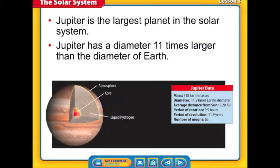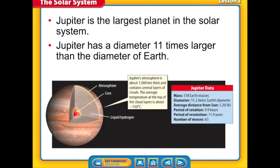Overall composition of Jupiter: Jupiter is 80% hydrogen and 20% helium, the same substances that we have in our sun. The atmosphere of Jupiter is 1,000 kilometers thick, contains several layers of clouds, and the average temperature at the top of these cloud layers is about negative 150 degrees Celsius.